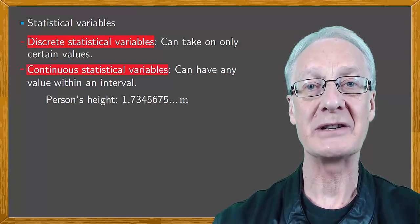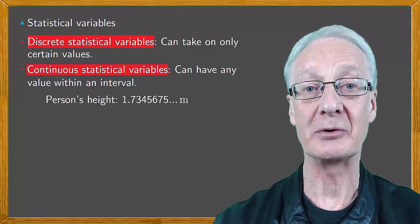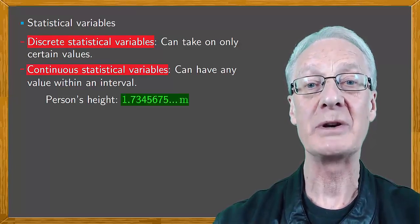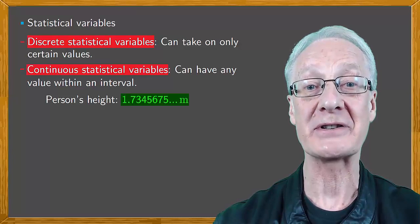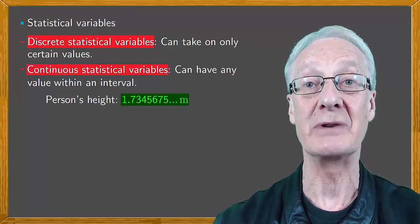The boundary between discrete and continuous variables can be somewhat diffuse. We don't, for instance, usually measure a person's height in meters to more than two decimal places.